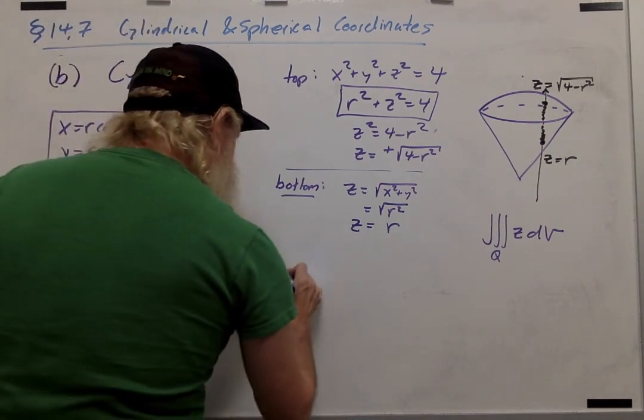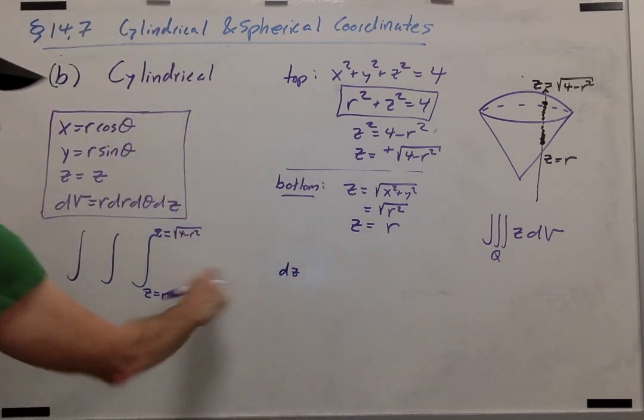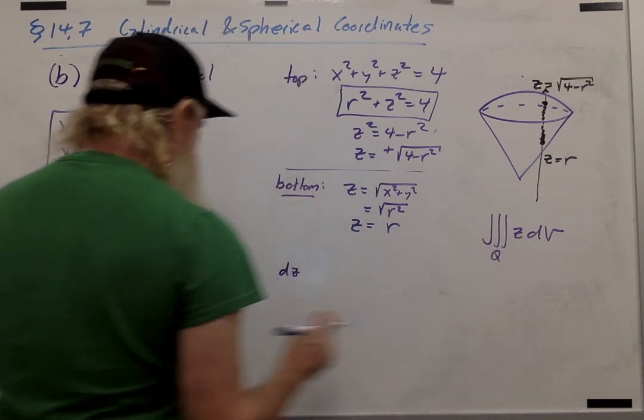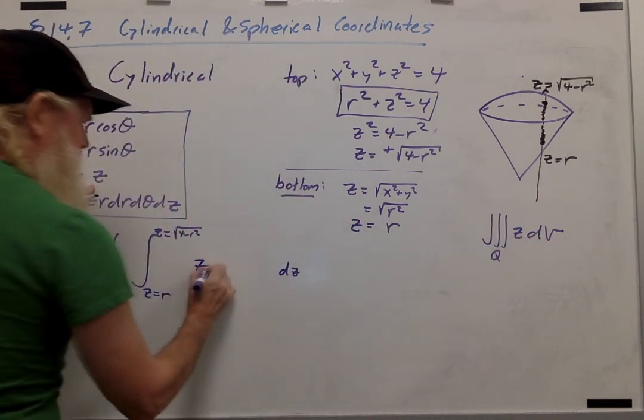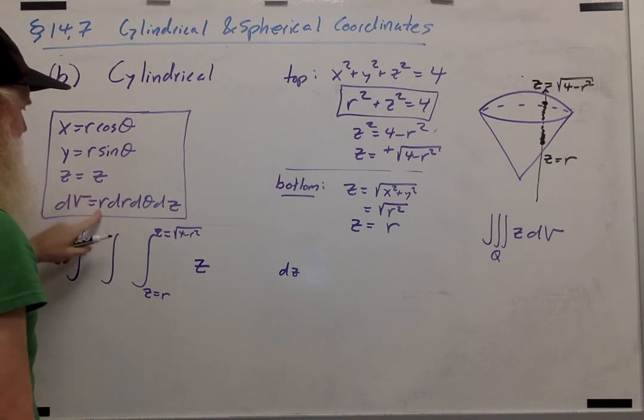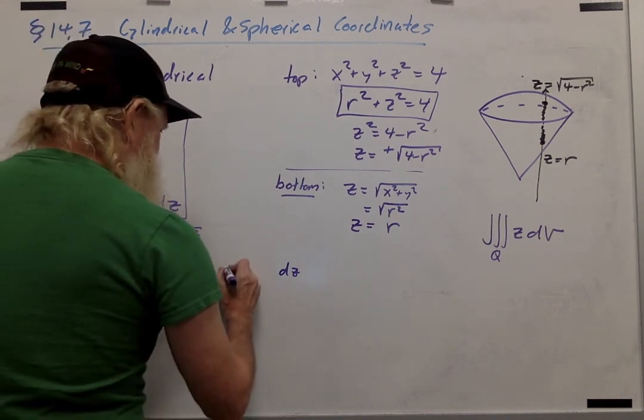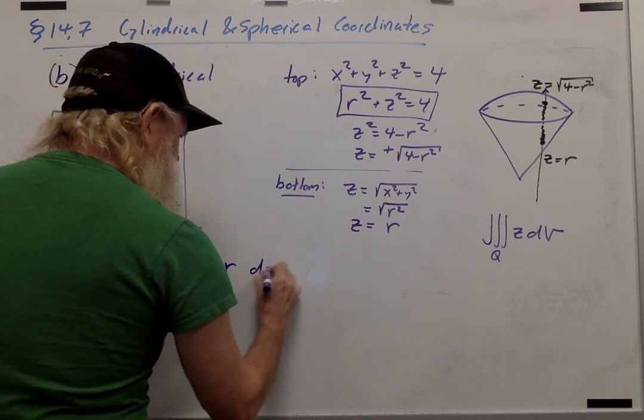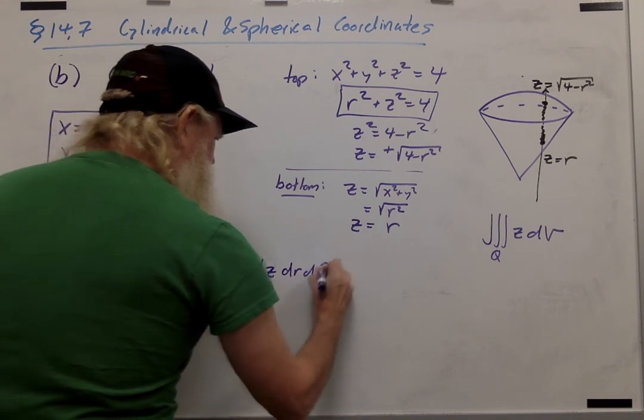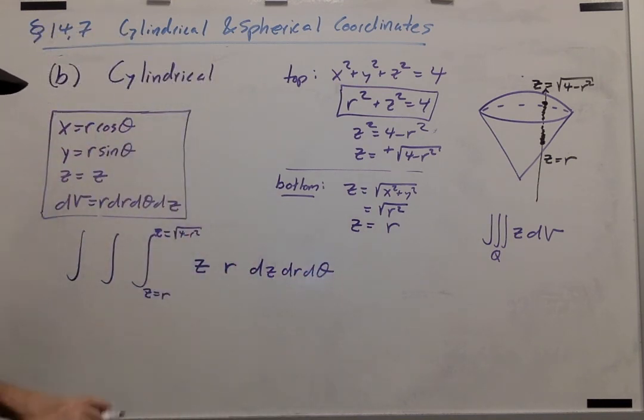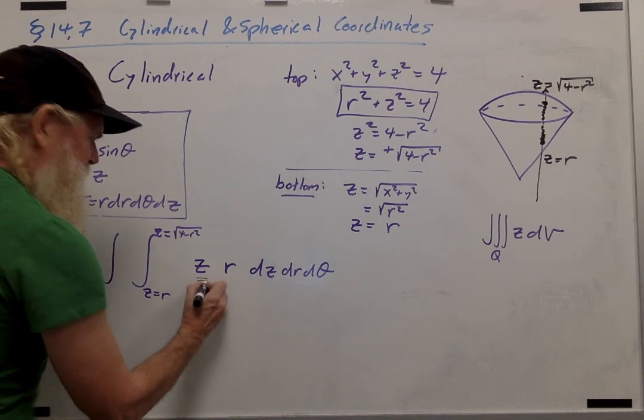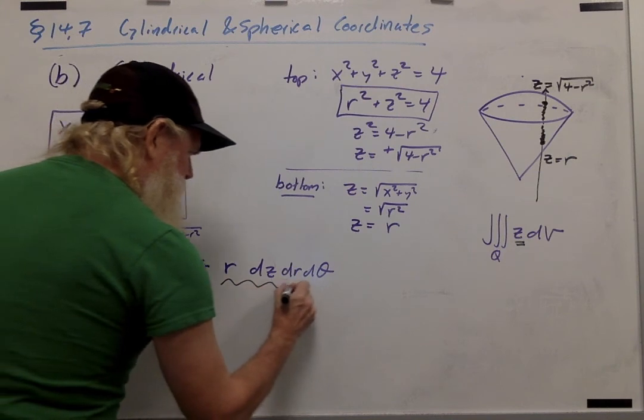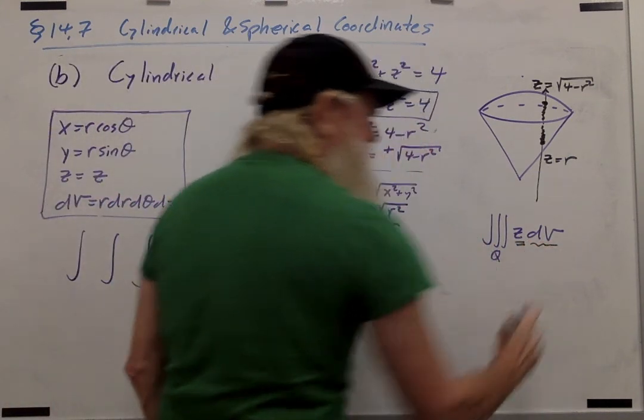Now before I get too far ahead of myself, let's start filling in the integrand. Remember I'm trying to set up z dV in cylindrical coordinates. z is just z, and dV is r dr dtheta dz. So I have an r dr dtheta dz, but I said I was going to put the dz first. So just make sure that you see how things match up. This z is this z, and r dz dr dtheta is taking the place of dV.